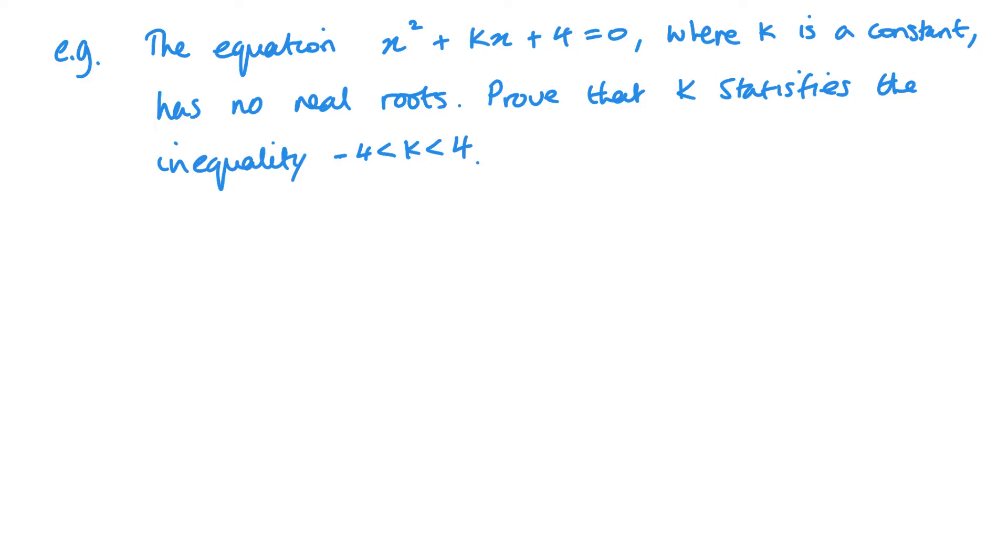So in this question here, we have an equation: x squared plus kx plus 4 equals 0. k is constant and this has no real roots. Prove that k satisfies the inequality minus 4 to plus 4. So nice, straightforward one. We have to start off with a fact that we know to be true. And we know that b squared minus 4ac is less than 0 when there are no real roots. We know that's a fact. Now let's substitute my values in. So we get k squared minus 4, lots of 1, and 4 is less than 0. So we've got k squared minus 16 is less than 0.